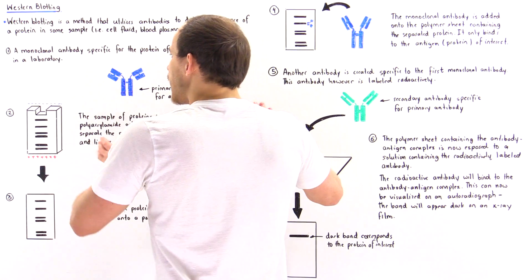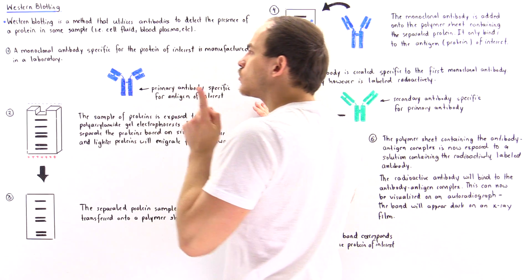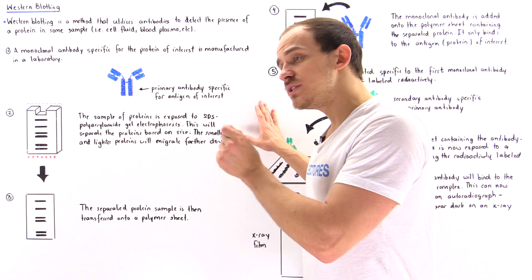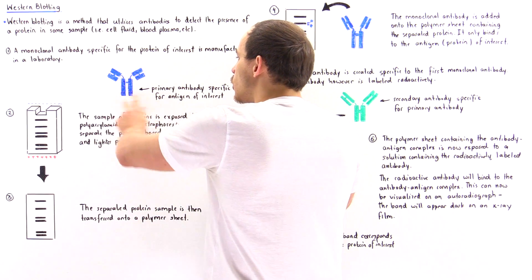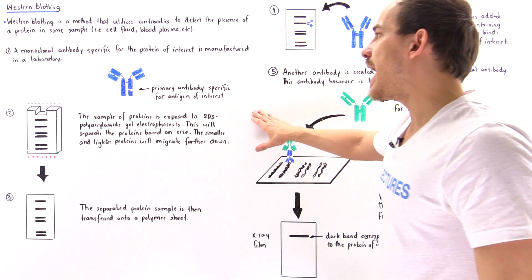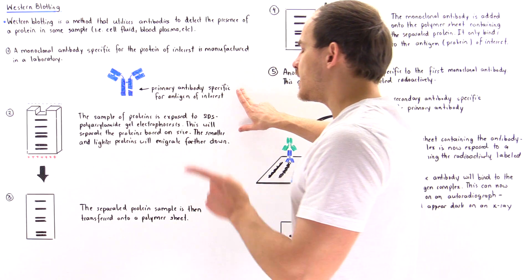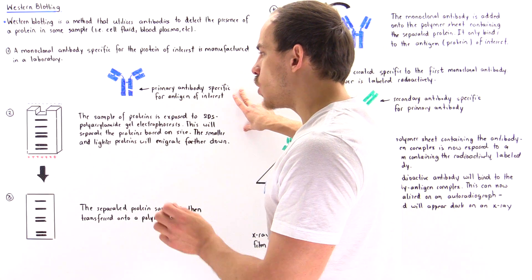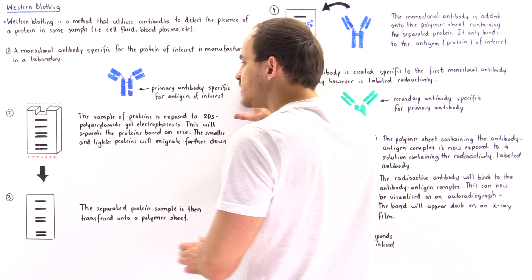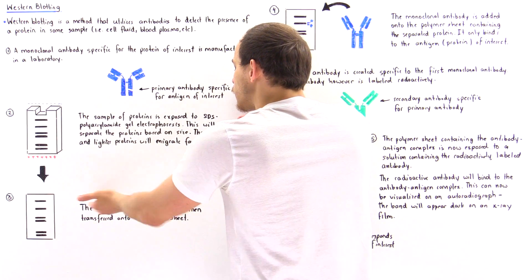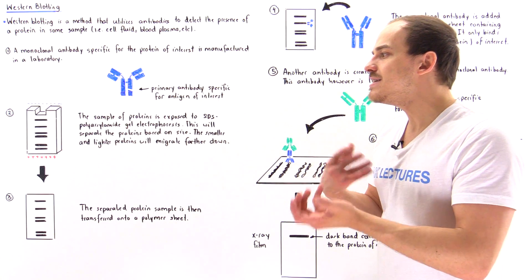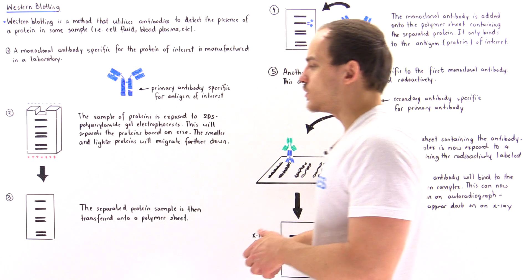Once we form the gel setup, we also synthesize a monoclonal antibody that is specific for the protein we want to study, which we call the antigen. This is called the primary antibody, and it can bind to that antigen — the protein we actually want to locate. After running gel electrophoresis, we transfer the separated protein sample onto a polymer sheet, making it easier to work with.